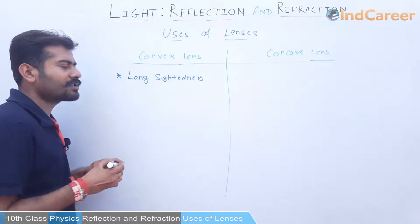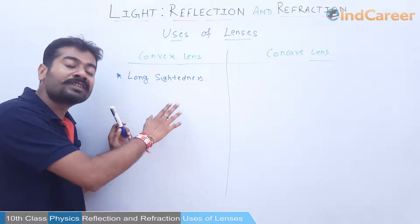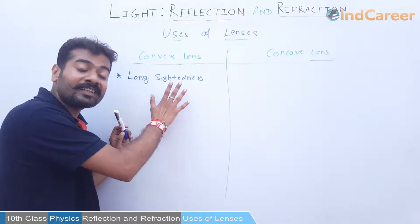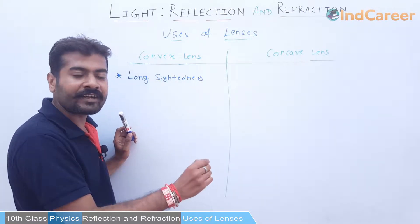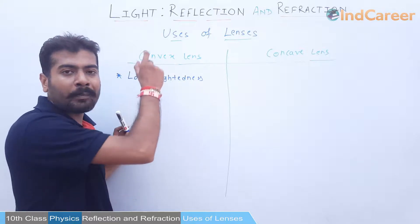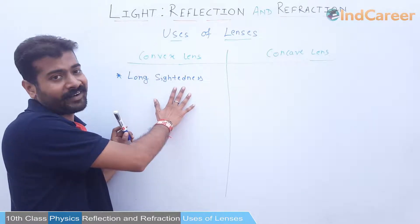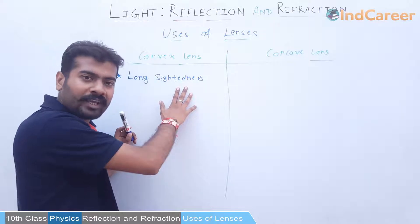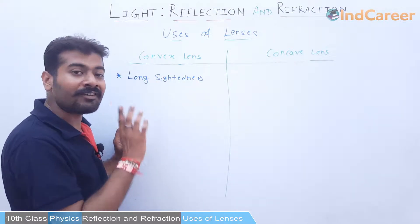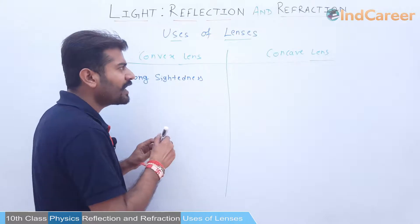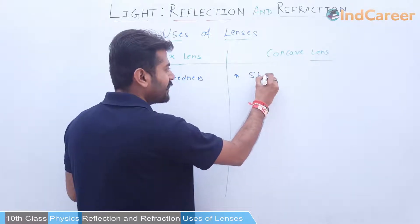Right now I want you to just remember the application — that convex lens is used in long sightedness. We will discuss why in the next chapter in very detail. So convex lenses are used in spectacles for correction of long sightedness. In the case of concave lenses, they are used for short sightedness.